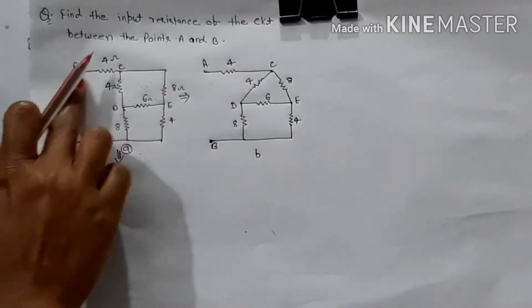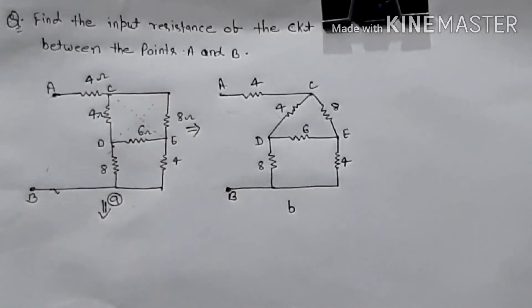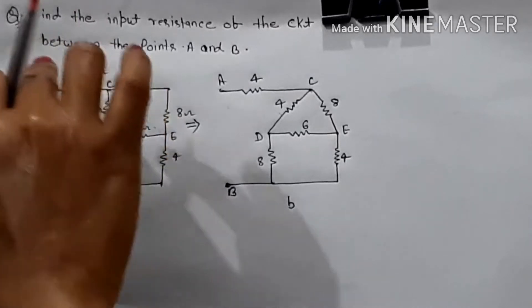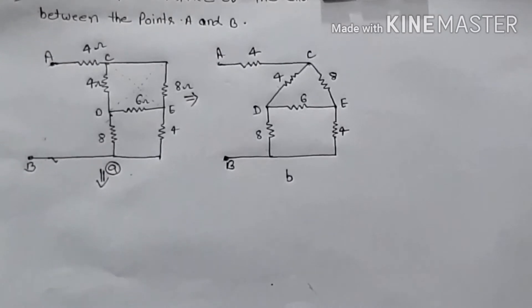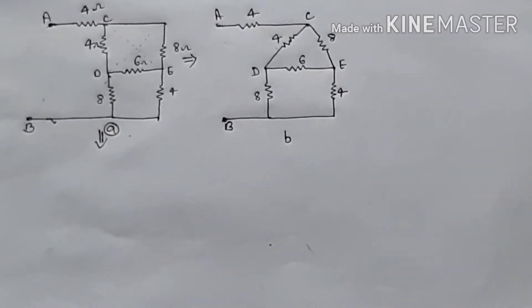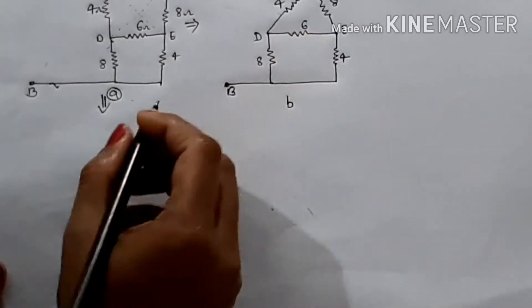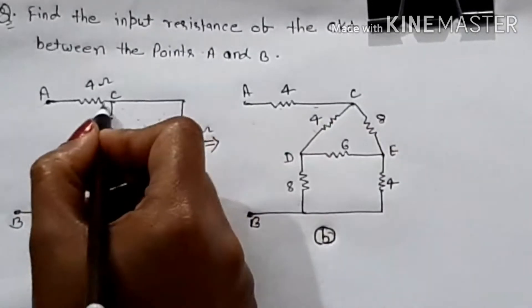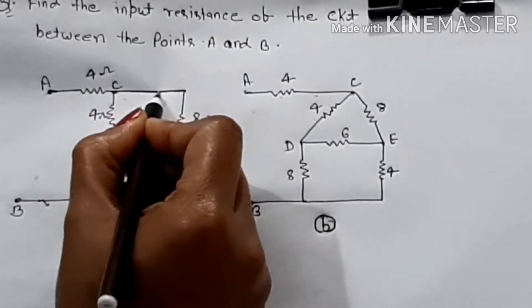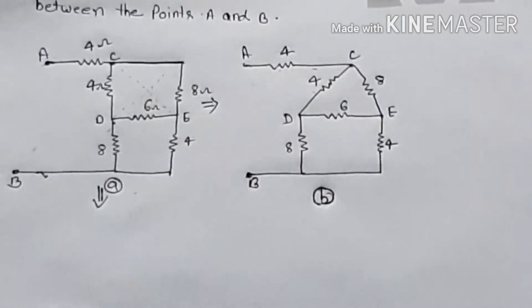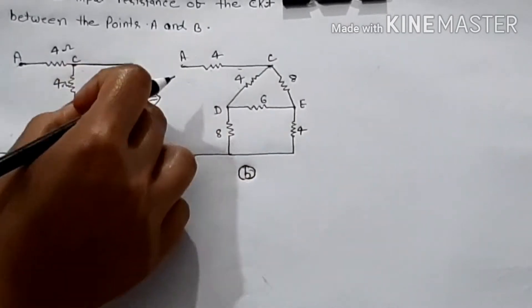Here we have a circuit that has equivalent resistance between point A and B. How will we proceed with this problem? First of all, we redraw from here to here. And this point here, here to here, is C point.